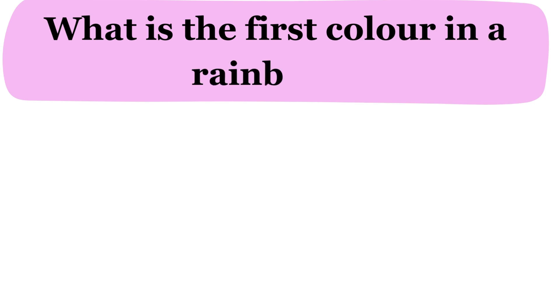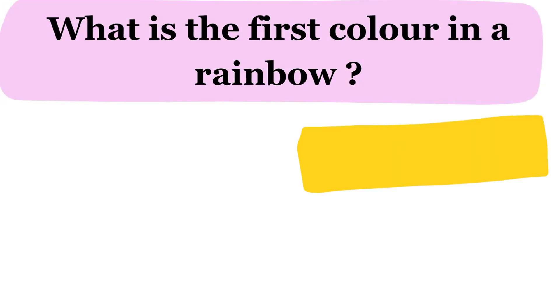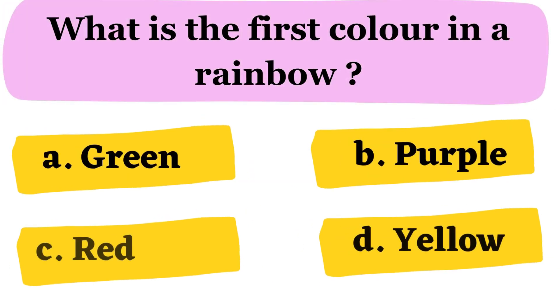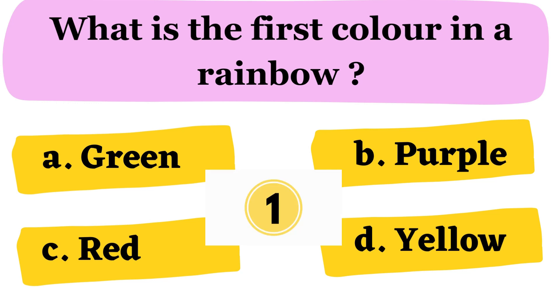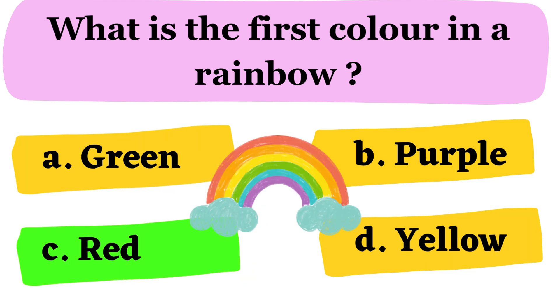Next question. What is the first color in a rainbow? A. Green B. Purple C. Red D. Yellow. The correct answer is option C.